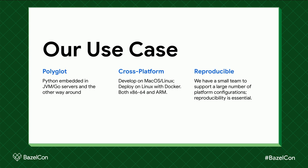Why do we use Bazel? There are three main reasons. One is that our software stack is quite polyglot — we have things like Python interpreters embedded, back-end JVM, and Go servers. We are cross-platform, so our developers are either on macOS or Linux. We deploy on Linux with Docker, and this was actually one of the main reasons we wanted cross-platform Python builds — so people on macOS can produce Docker images with the correct native dependencies to run on Linux. We also have x86 and ARM mixed in, and we place a very high premium on reproducibility. We're a startup with a pretty small team supporting all these platform configurations, so reproducible and predictable builds are really important to keep our support costs down.